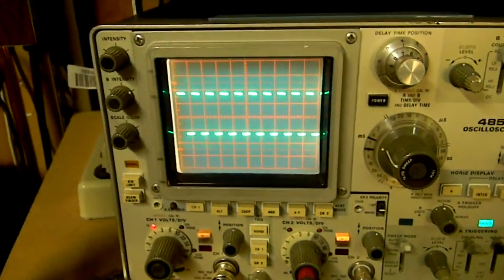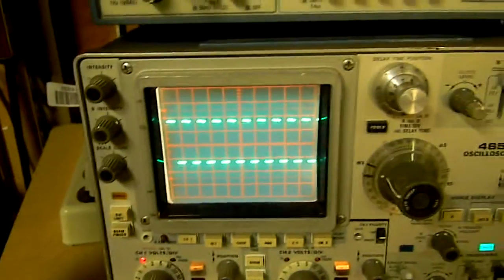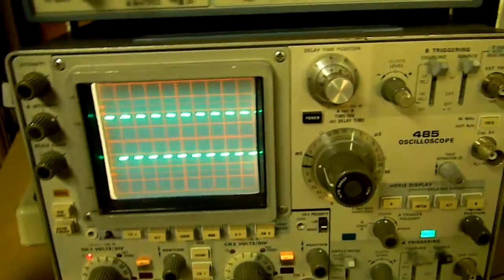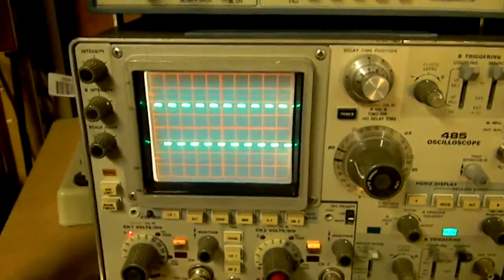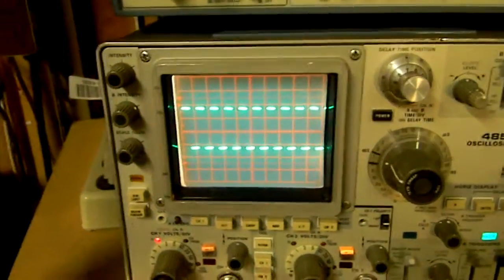Because you could have a hole, is what it was called, a hole in the data. You could have a dropout, an anomaly, whatever you want to call it. You'd have a problem with a track.